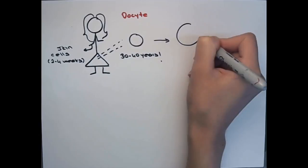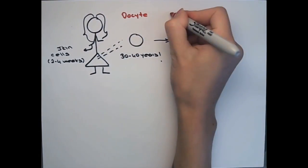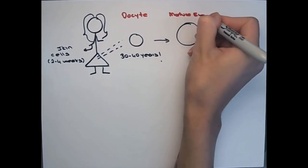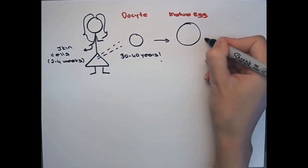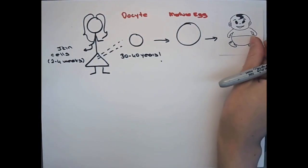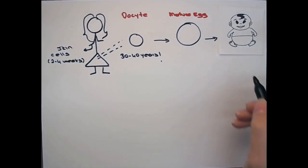The oocyte spends most of its lifetime in a dormant stage until it gets activated to mature into an egg. It is not known how oocytes survive so many years and still have the potential to divide and give rise to a new organism.